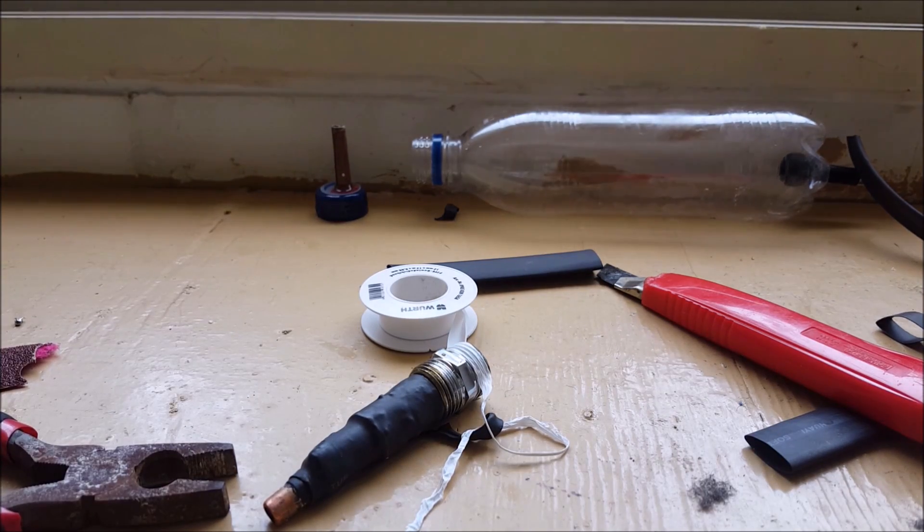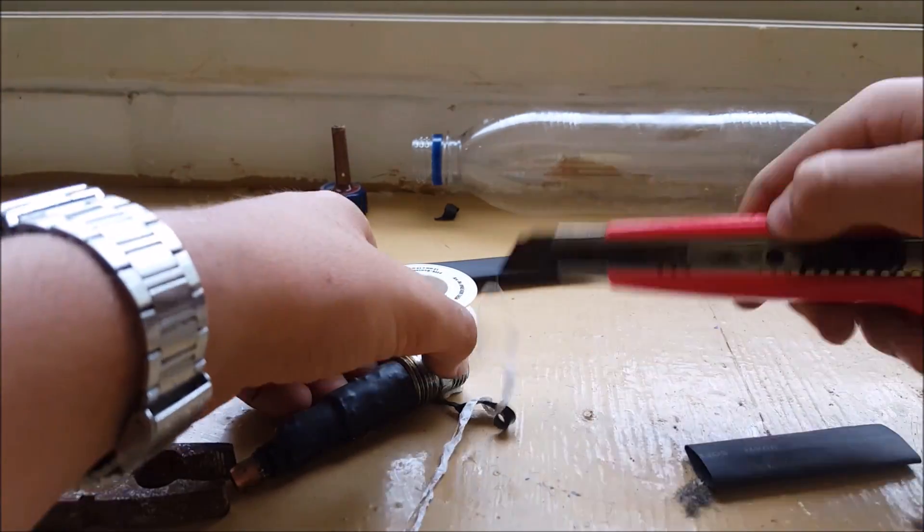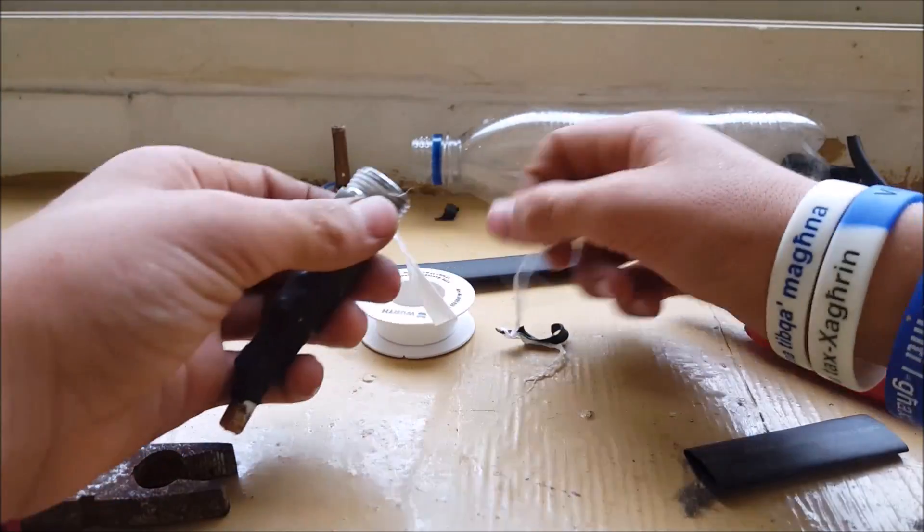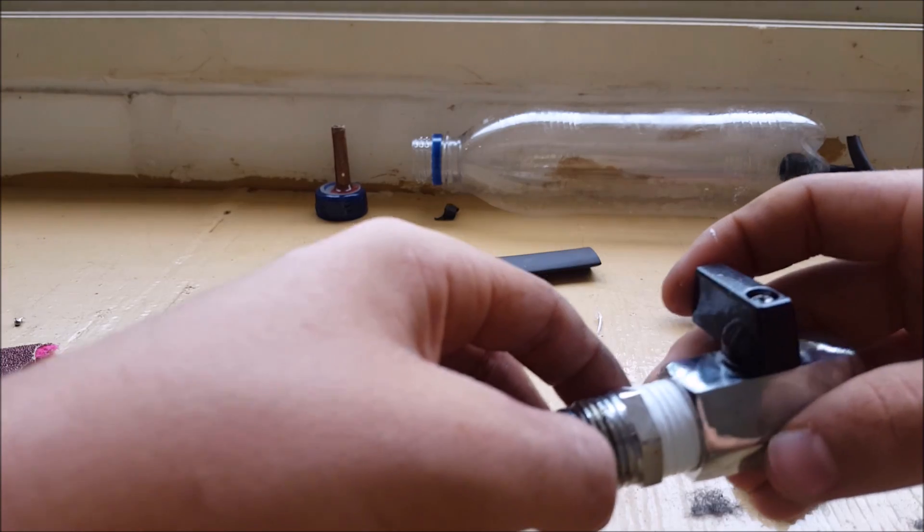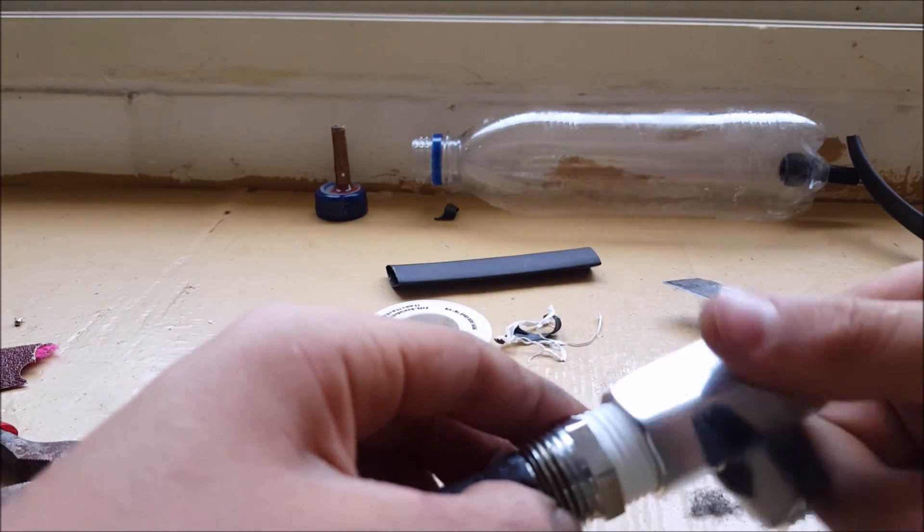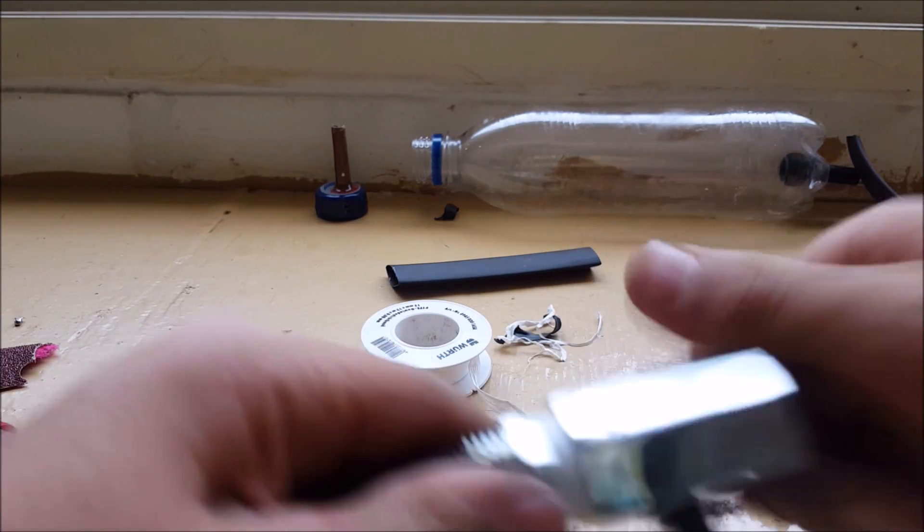And now what are we going to need to do is put some plumbers teflon tape over the pipe nipple so that air won't leak. And then screw it into our valve, also it doesn't matter on which side you screw it in.